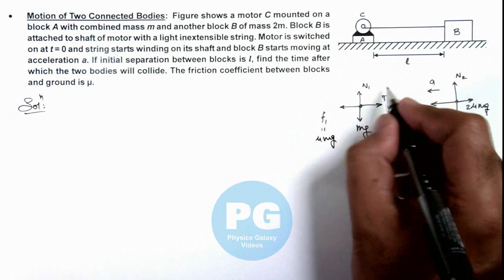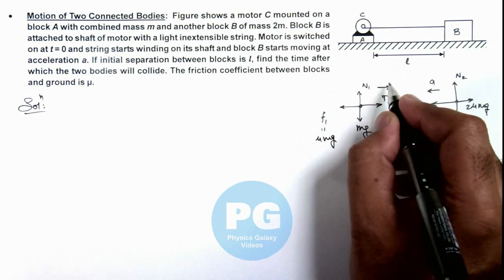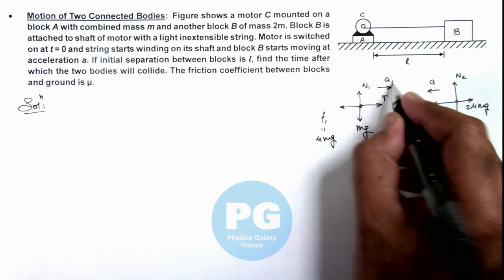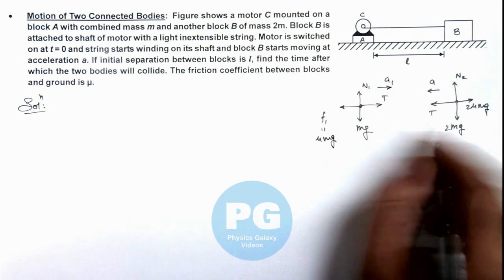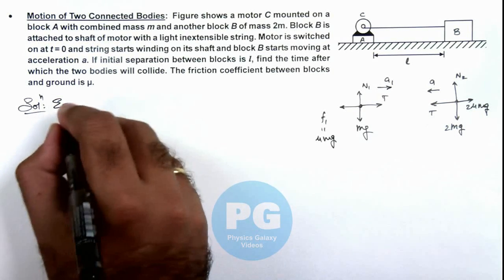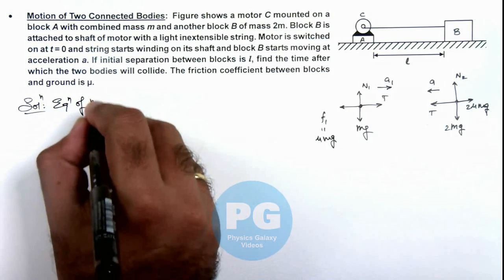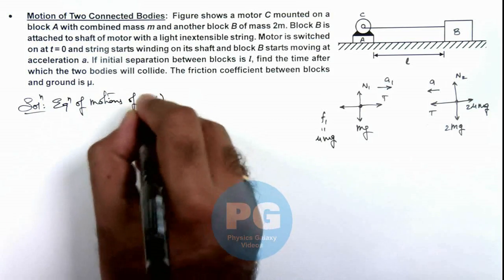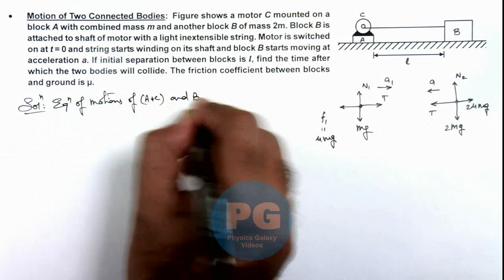We can consider here that the acceleration of this system of block A and motor C is say a1. Then here we can write directly the equation of motions of A plus C and B.